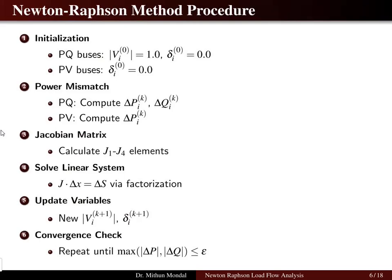In the Newton-Raphson method, the basic algorithm is: first, initialize the PQ bus voltage as 1 and angle as 0 (0th iteration), and the PV bus angle as 0. Second, compute the power mismatch — for the PQ bus, compute real and reactive power mismatch; for the PV bus, compute only real power. Third, calculate the Jacobian matrix elements J1 to J4 using the formulas from the previous slide.